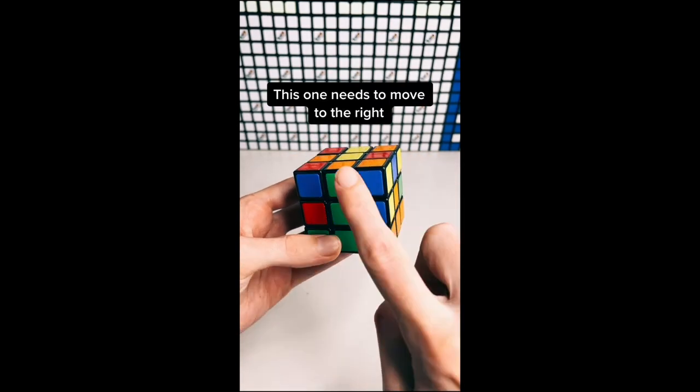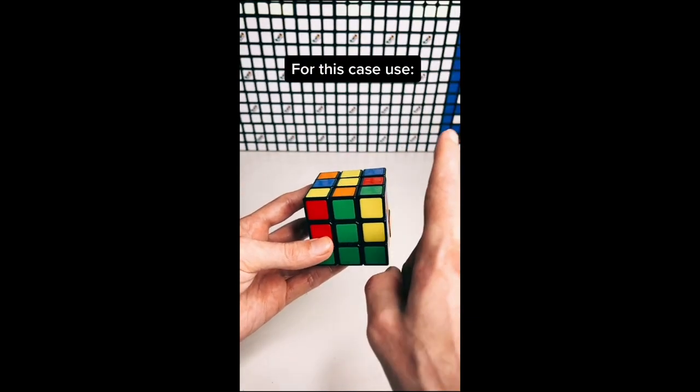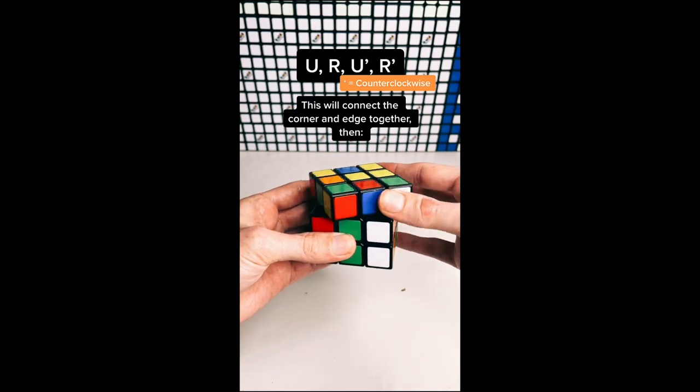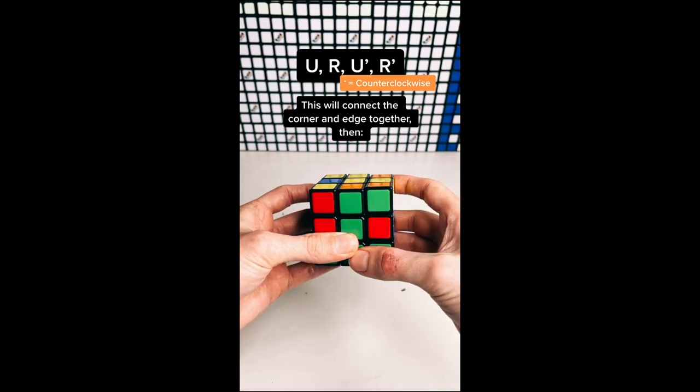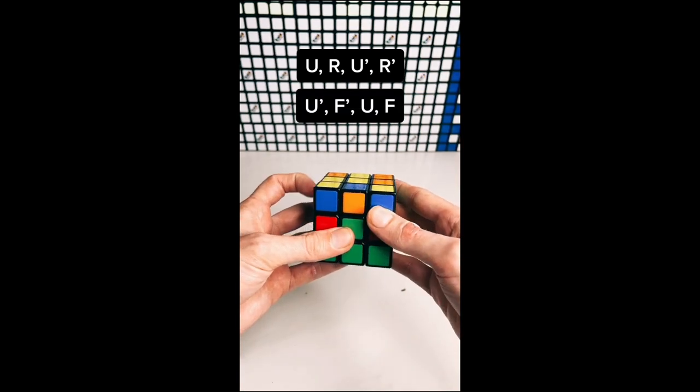This one needs to move to the right. For this case use U, R, U', R'. This will connect the corner and edge together. Then U', F', U, F.